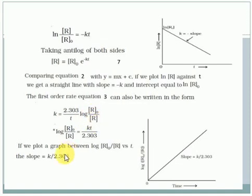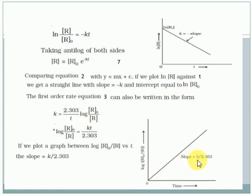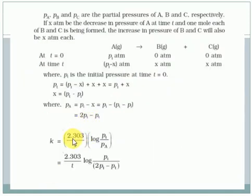Remember, if you draw a graph of log(r0/r) with respect to time, you will get a straight line. The slope value will be k divided by 2.303. This graphical method is useful for determining the rate constant k from experimental concentration-time data.